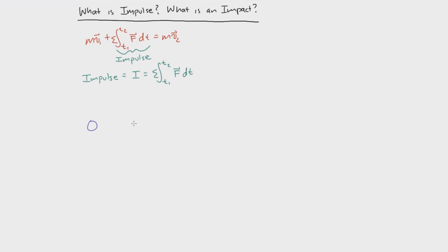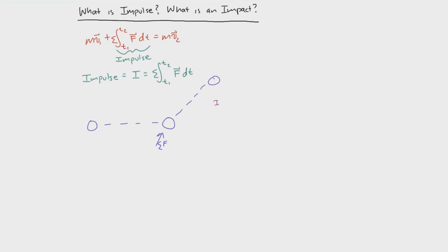Let's redraw that example from the previous video. We have some particle or ball and it changes its momentum because there's some external force acting upon it — the sum of the external forces acting on the object. This force is an impulse because the force is intended to act or make contact with the object we're interested in, and for a given amount of time that contact changes the object's momentum. So by definition, impulse is any given external force that changes momentum, regardless of how long it is in contact with the object of interest.